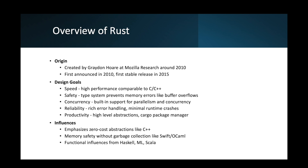For influences, Rust emphasizes zero-cost abstraction like C++. Idiomatic Rust aims to have no runtime cost for abstraction use, with a goal to provide useful programming models with the performance of manual C code. For memory safety without garbage collection, like Swift and OCaml, Rust uses RAII patterns instead of GC for memory management. The compiler tracks lifetime and ownership statically, making it much safer.